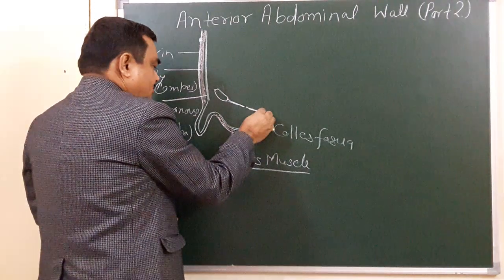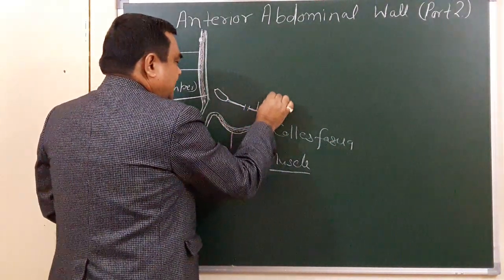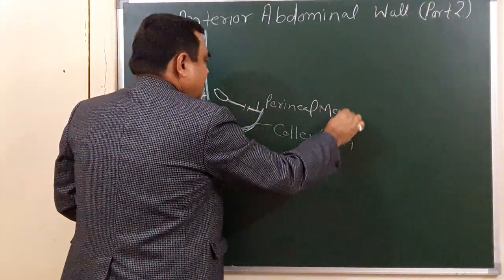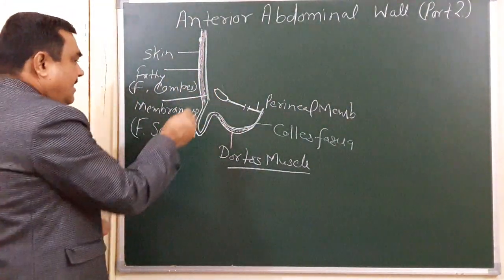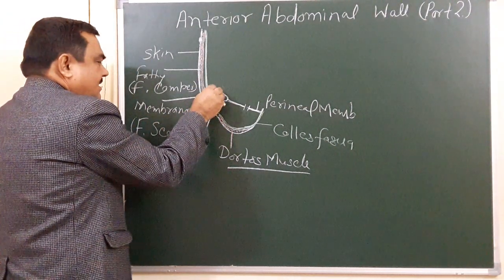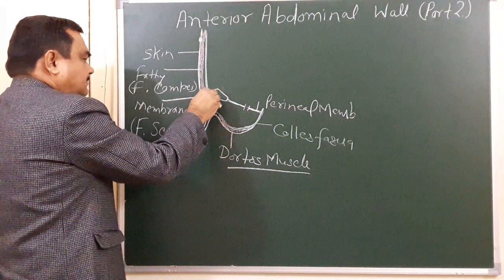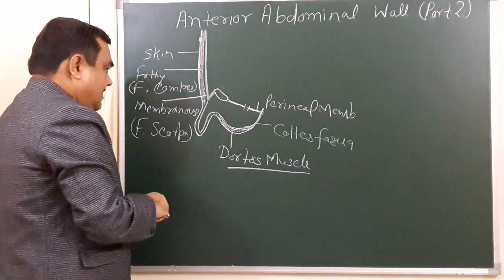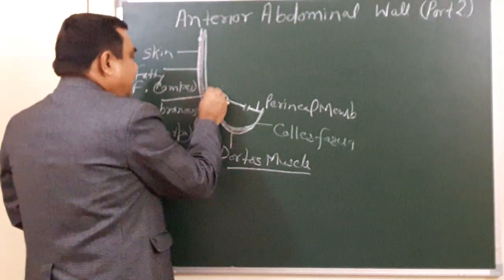This fascia pierces at the perineal membrane. This is the perineal membrane. At the pubis, the membranous layer also forms the suspensory ligament of the penis, which extends from the pubis to the penis. This is the suspensory ligament of the penis.